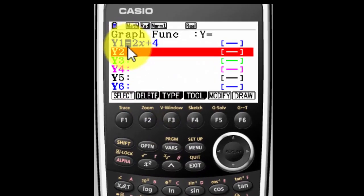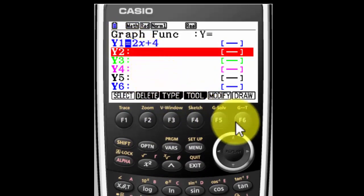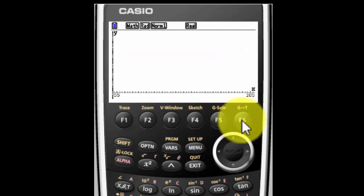And you'll notice the equal sign is highlighted. That means it's an active function and that's what we want. To display the graph, all you do is press F6 because that's the soft key under the word draw. And it actually makes my graph.